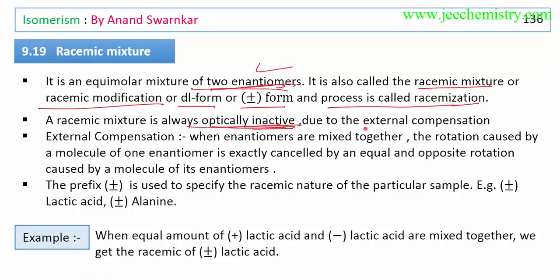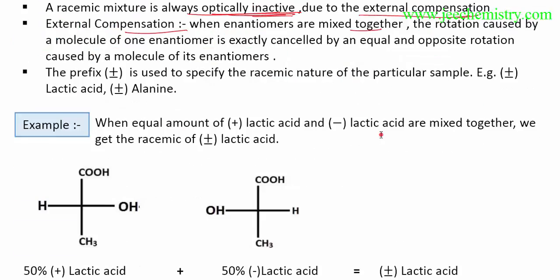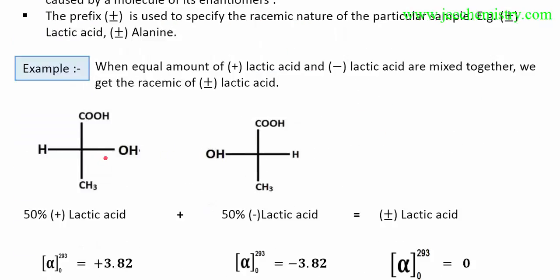It is optically inactive due to external compensation. External compensation occurs when two enantiomers are mixed together. One is the plus form — this is the D form, dextrorotatory, rotating plane-polarized light to the right. The other is the minus form — this is the L form, levorotatory, rotating plane-polarized light to the left. They cancel each other's rotation.